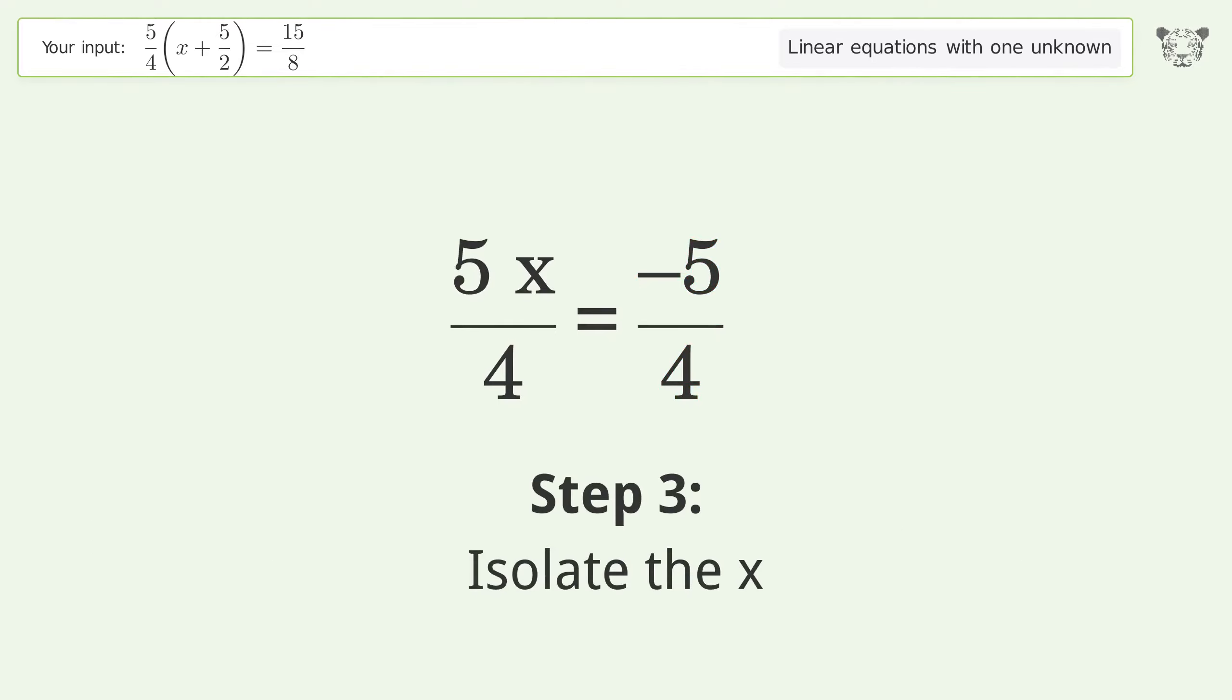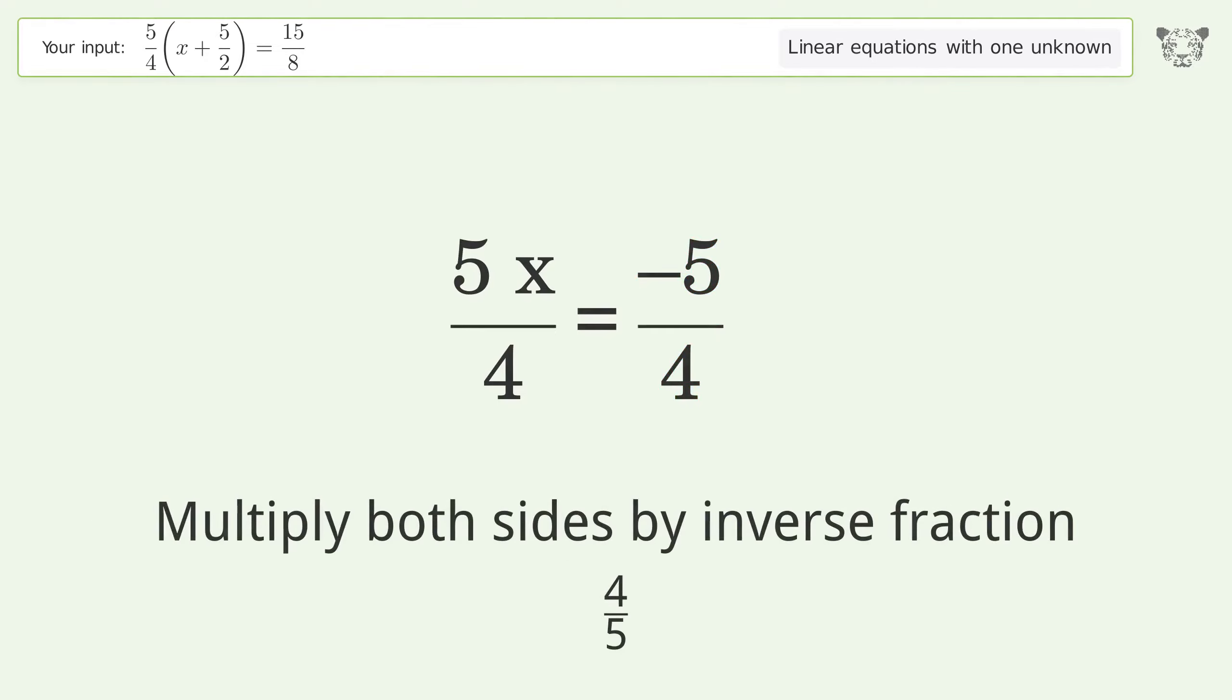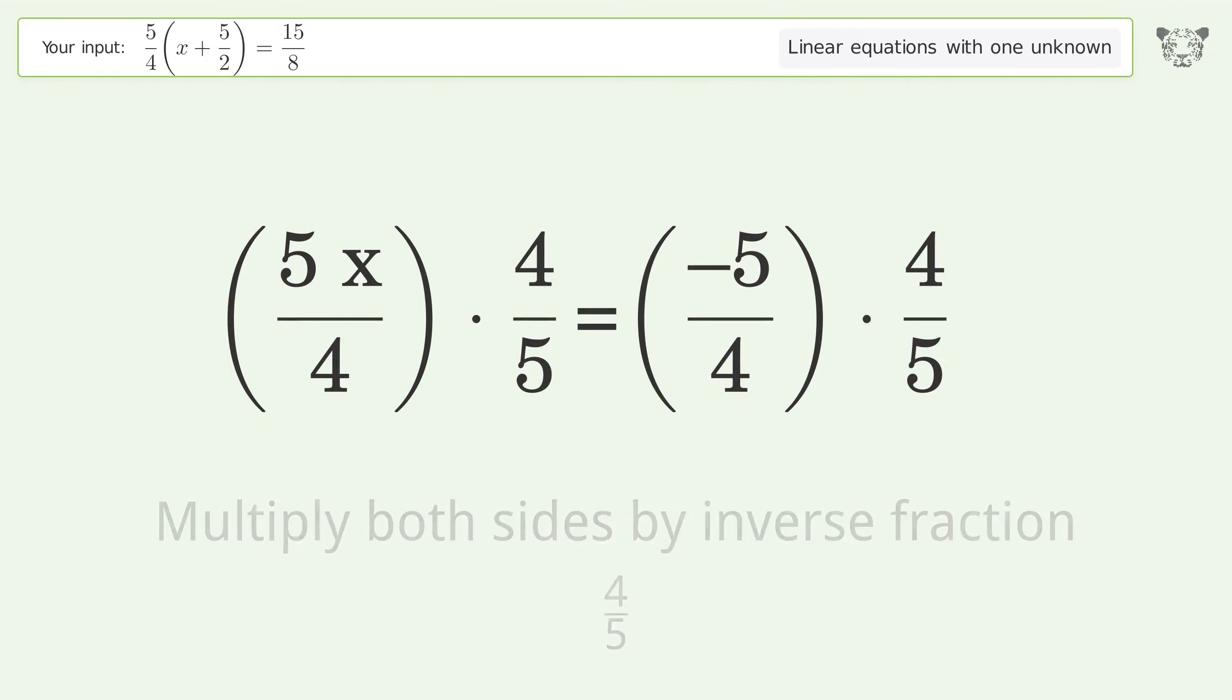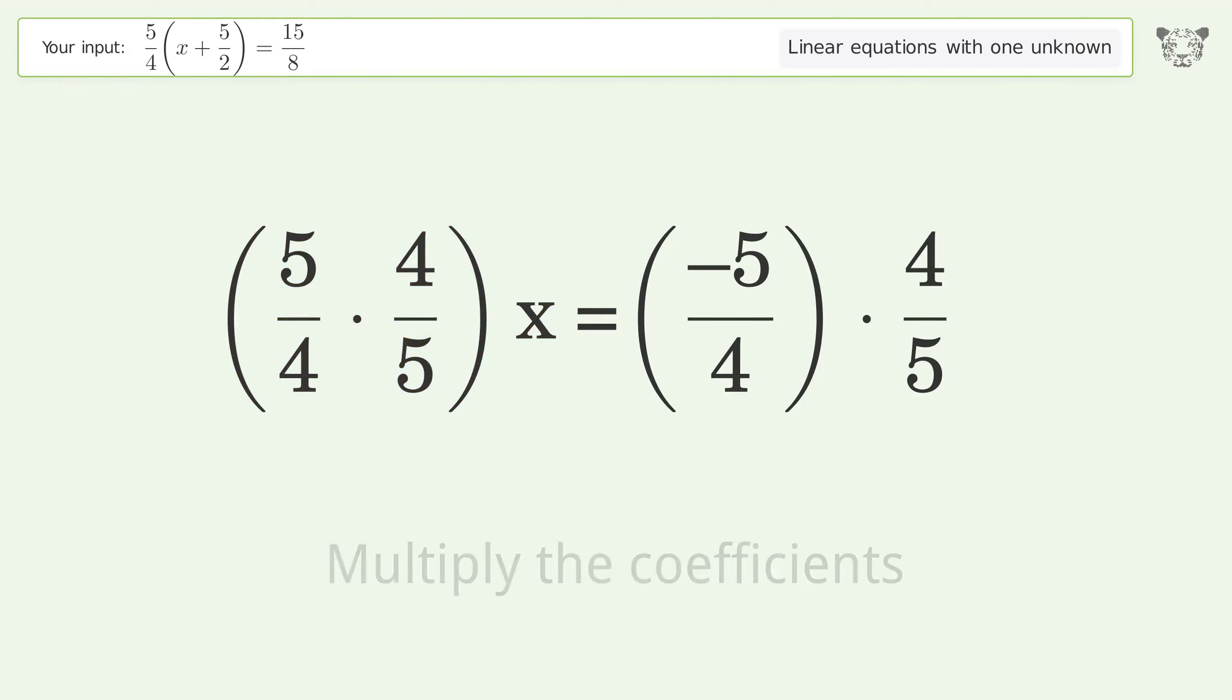Reduce the zero and cancel the greatest common factor. Isolate the x by multiplying both sides by the inverse fraction 4 over 5. Group like terms.